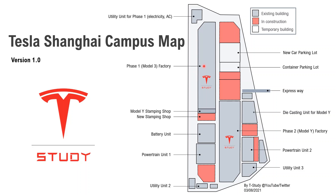The next one is the phase one factory producing Model 3 — this is the first massive production facility in Shanghai. And this one is the Model Y stamping shop. Although it's working for the Model Y facility, it is physically attached to the Model 3 factory. The one shown in red is currently under construction — it's a new stamping shop. I have a video about this structure in my channel, welcome to take a look.